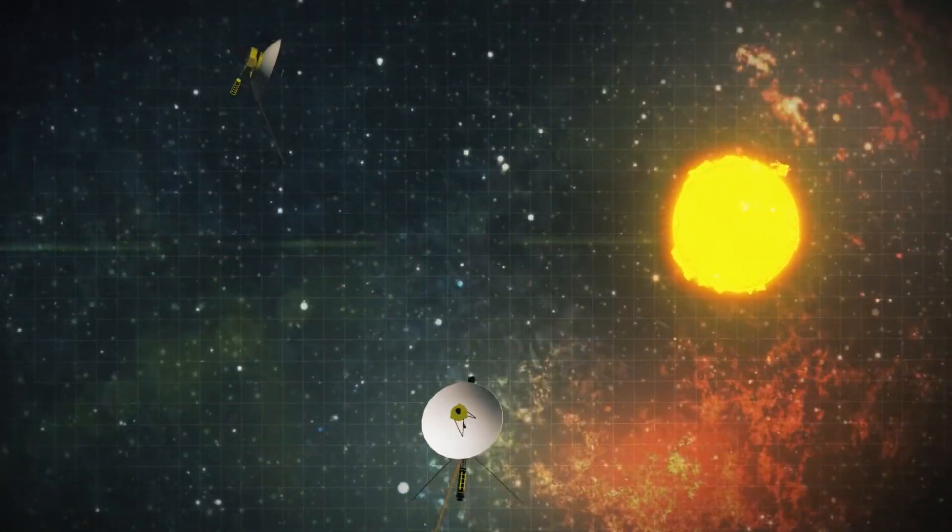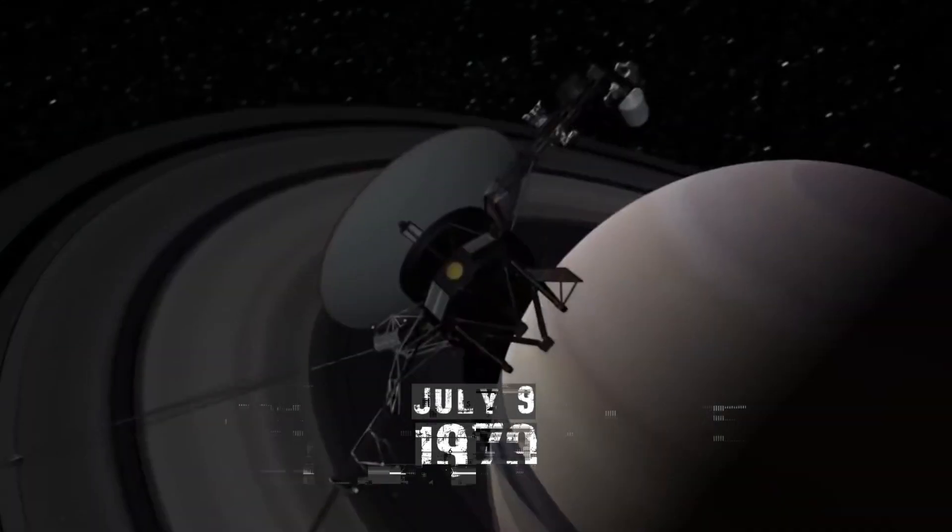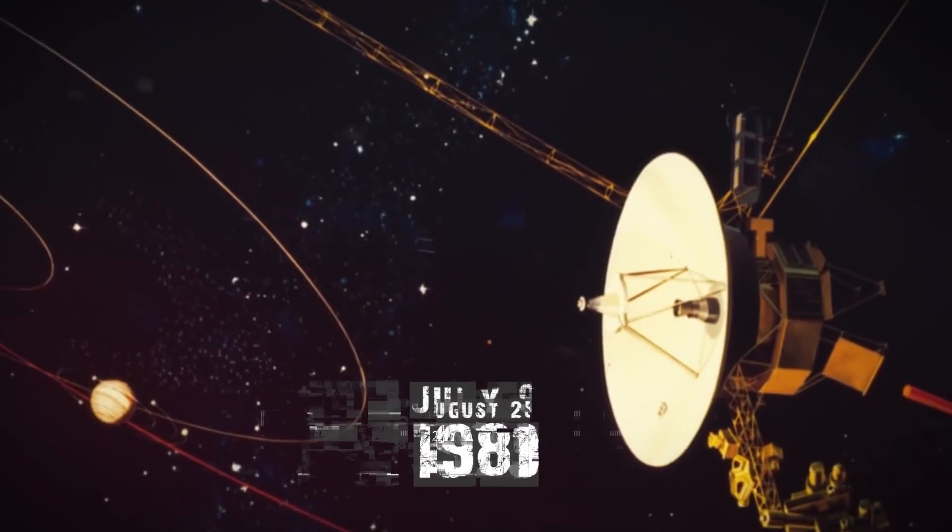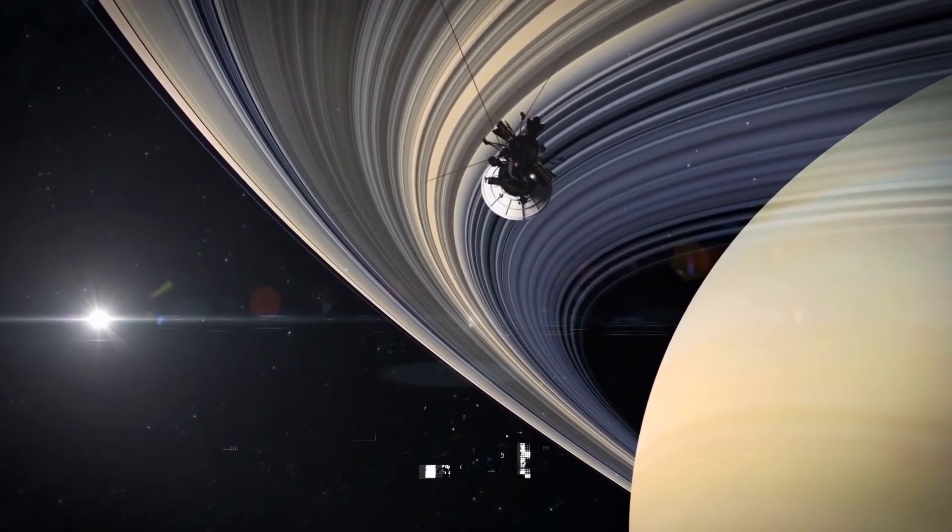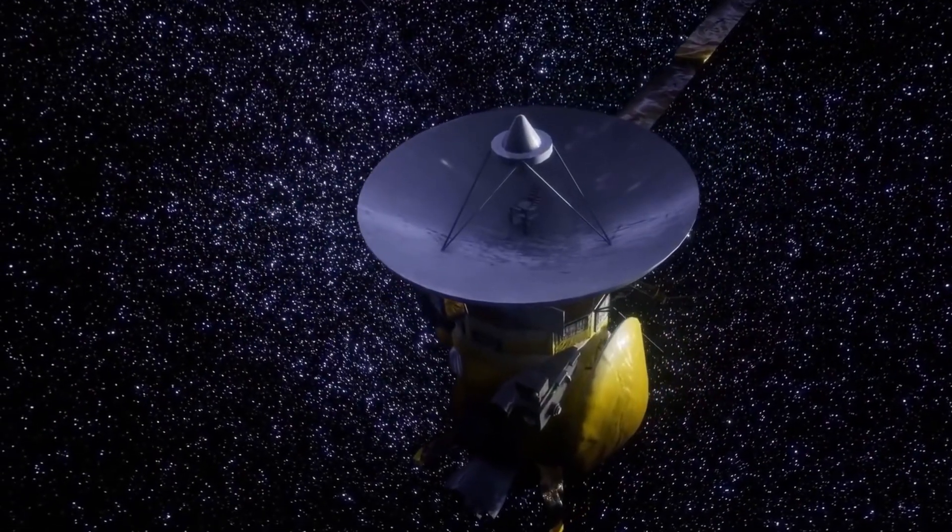As compared to Voyager 1, Voyager 2 moved more slowly and took a longer path. On July 9, 1979, it crossed Jupiter, and on August 25, 1981, it passed Saturn. Following its encounters with Uranus and Neptune, it was propelled into interstellar space.